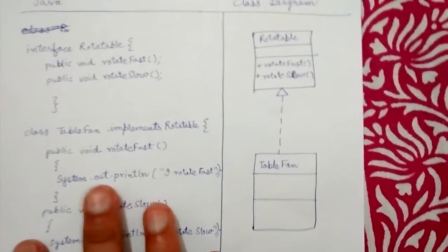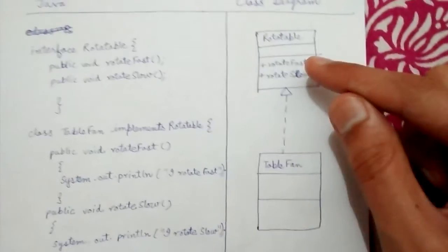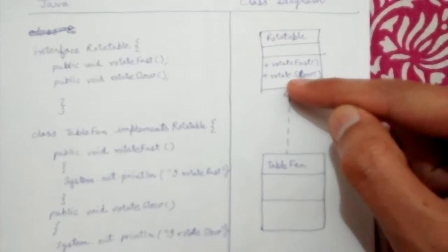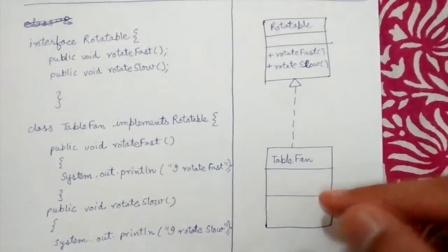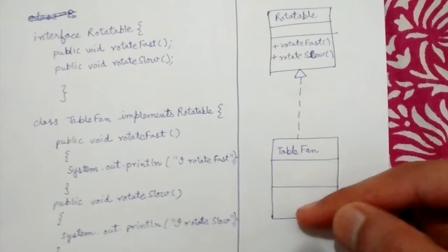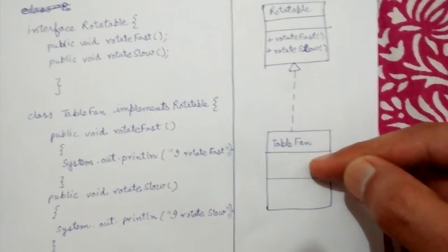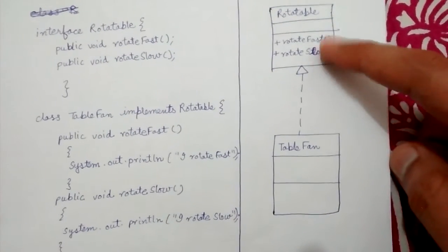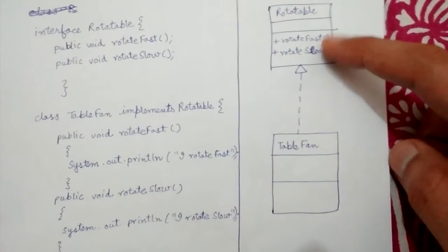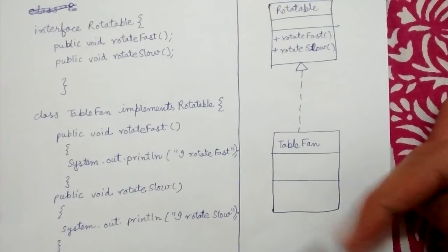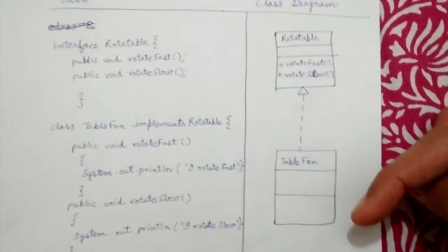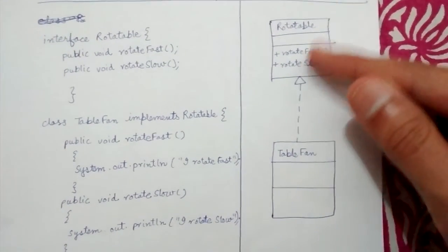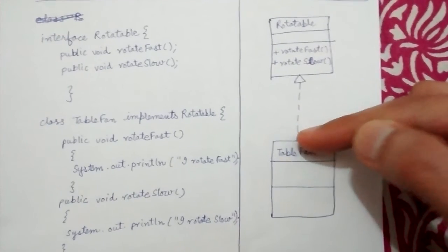Let's see the UML class diagram parallelly. In rotatable, rotate fast and rotate slow are represented. In table fan, the class can of course add a new functionality of itself, but in our case we have not added, so only the inherited attributes are there. This is the UML class diagram and the dotted straight line and the triangle is with this interface, not this side.